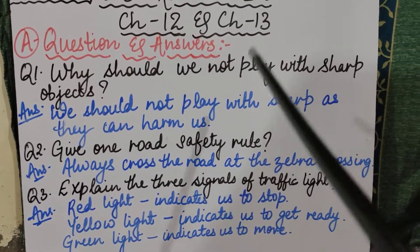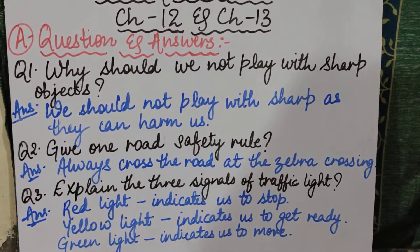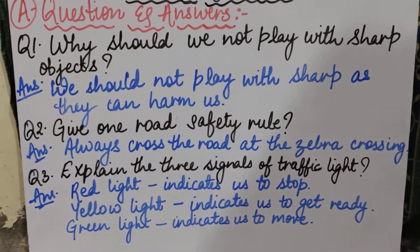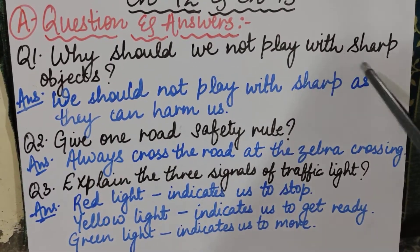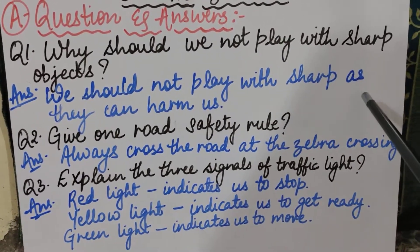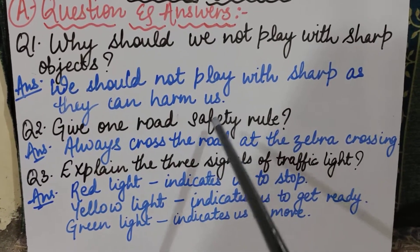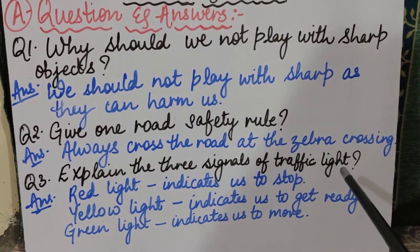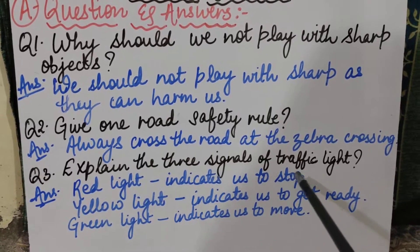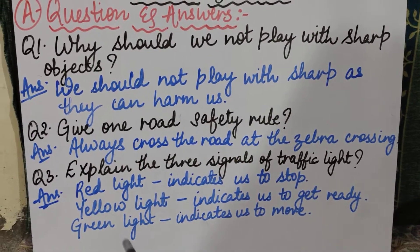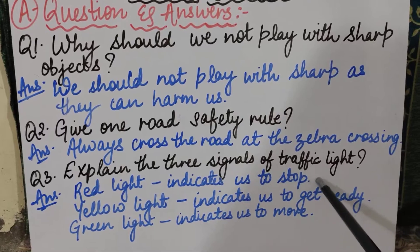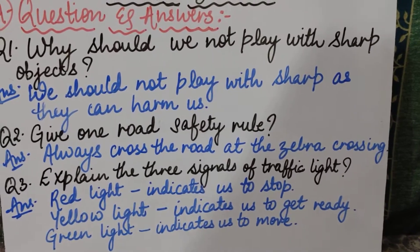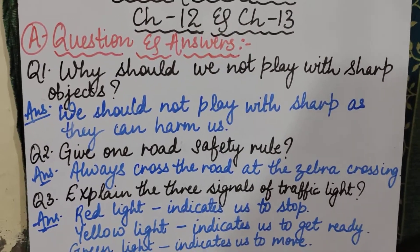I hope all three question answers are clear. Let me repeat them. Question one: Why should we not play with sharp objects? Answer: We should not play with sharp objects as they can harm us. Question two: Give one road safety rule. Answer: Always cross the road at the zebra crossing. Question three: Explain the three signals of the traffic light. Answer: Red light — stop; Yellow light — get ready; Green light — move.